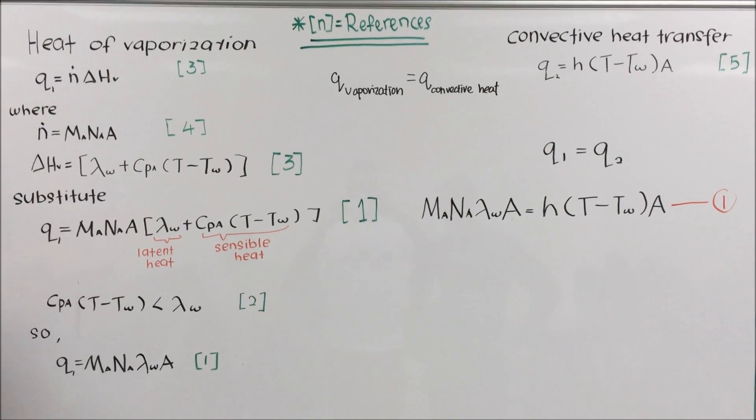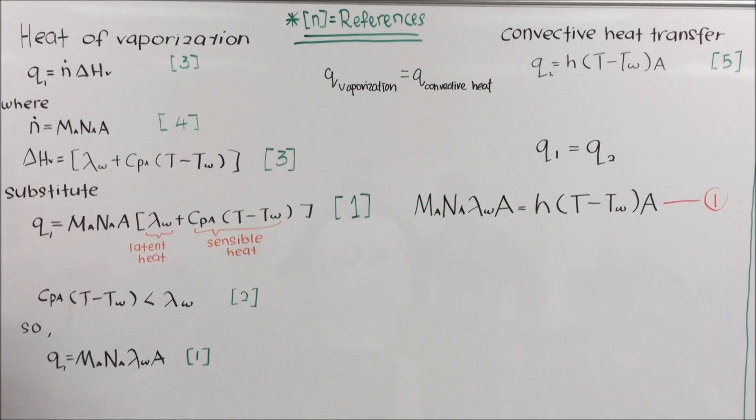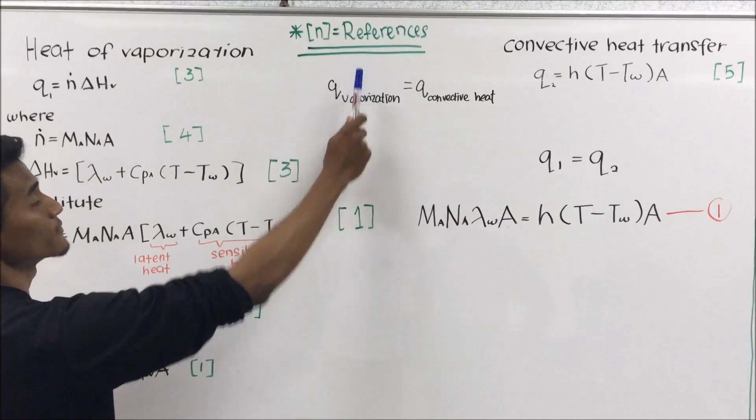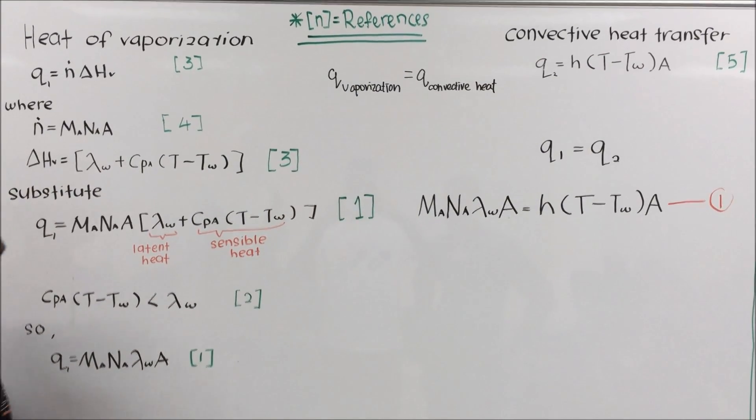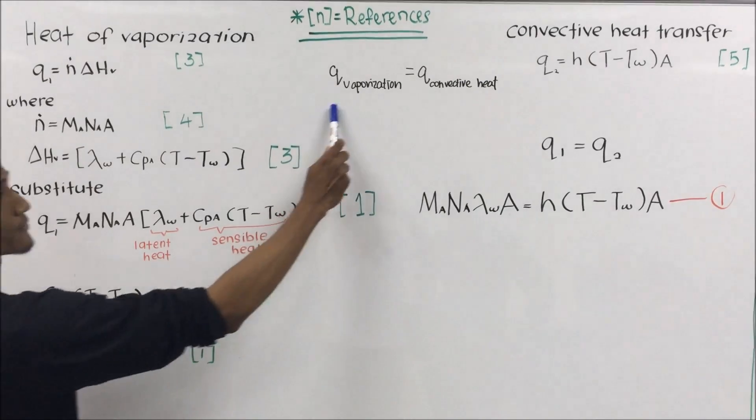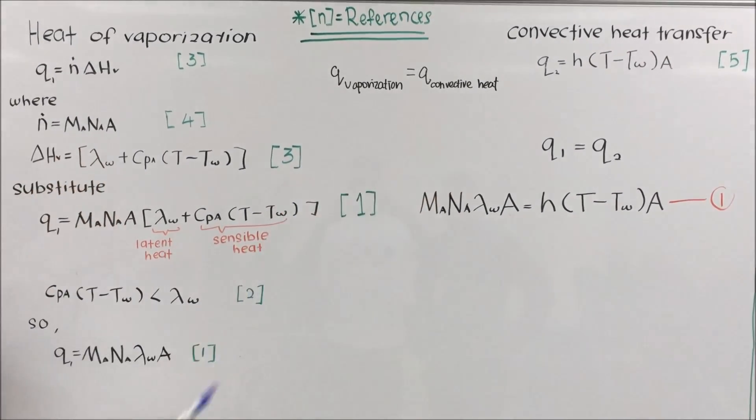The derivation of wet bulb temperature: First of all, the green color is referred for the reference. Since the system is at steady state, Q vaporization is equal to Q convective heat.